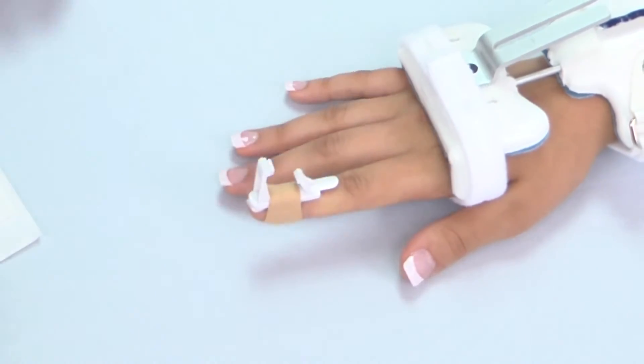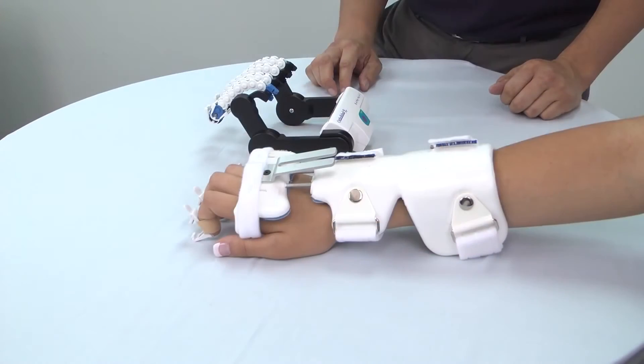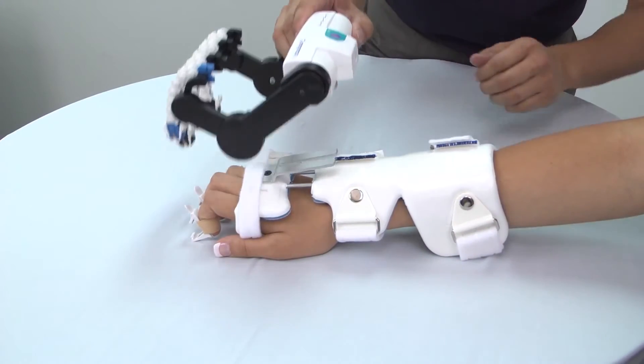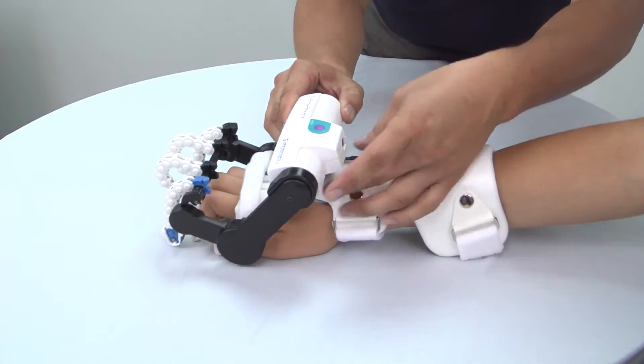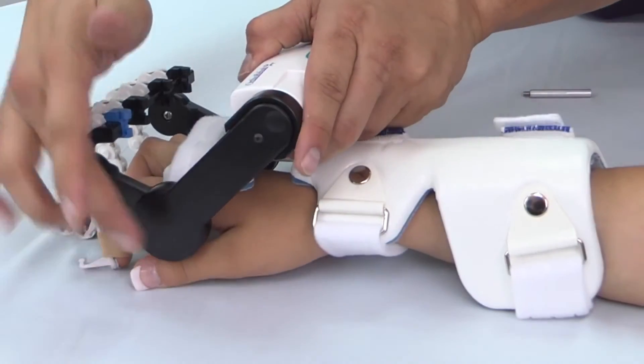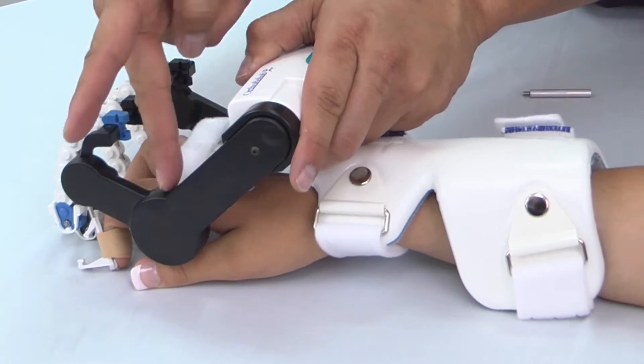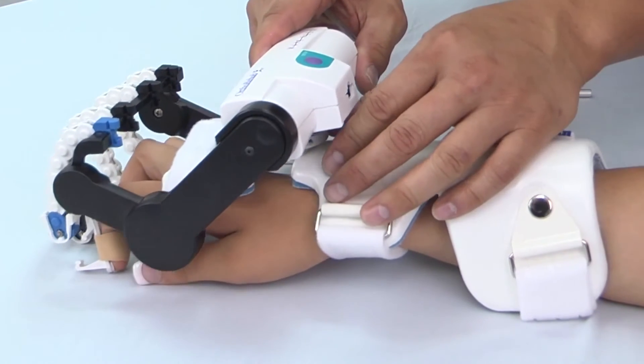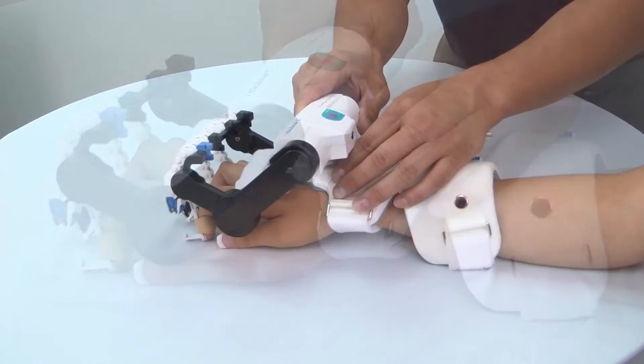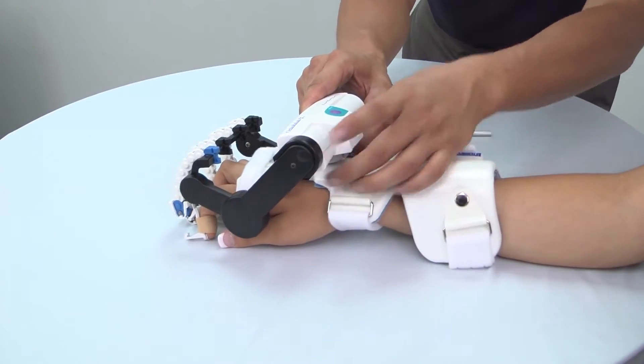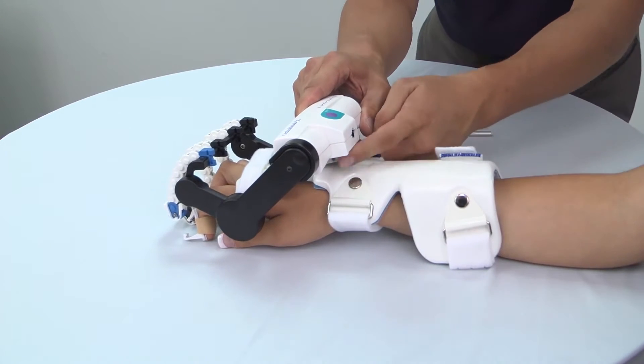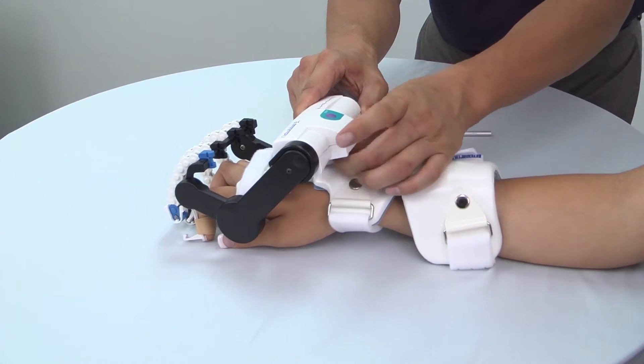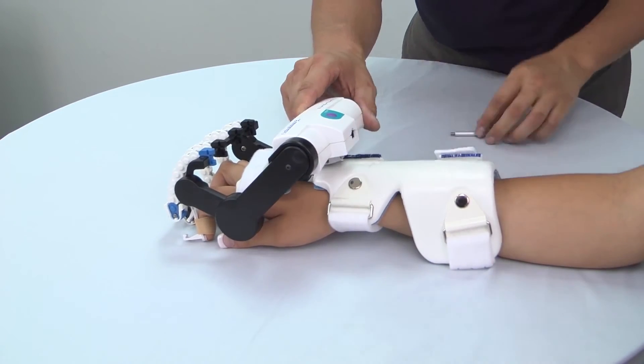Clamp the CPM actuator to the splint by loosening the lock knob and sliding the actuator onto the splint's mounting bracket. Position the actuator so the center of the large round hinge aligns with the center of the MP joints. You may also want to adjust the actuator laterally or medially to make room for the thumb. When adjusted correctly, tighten the lock knob.